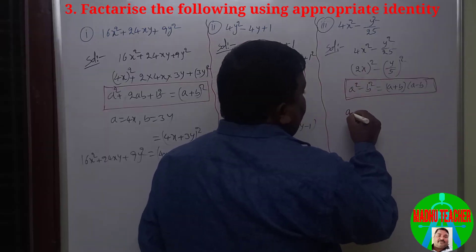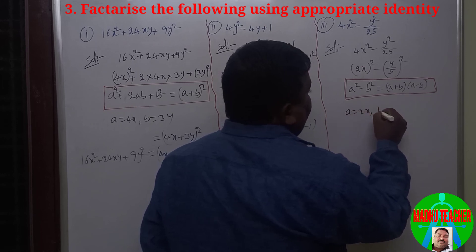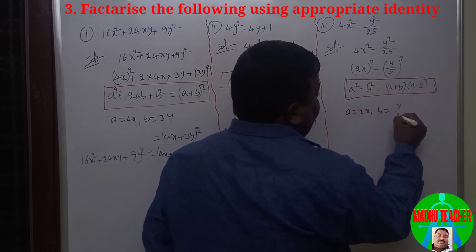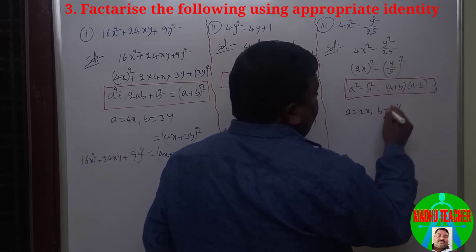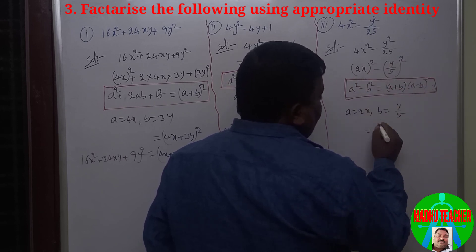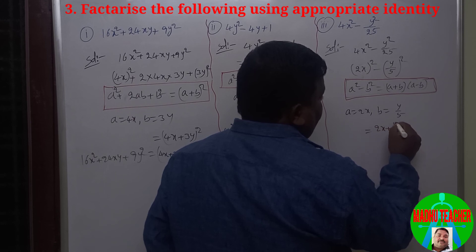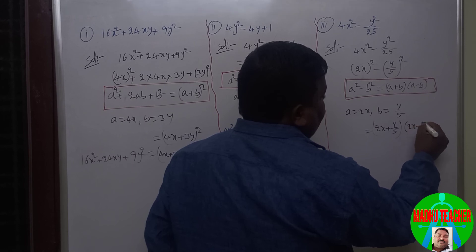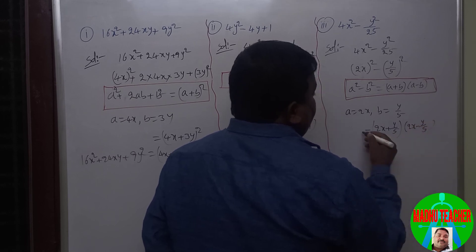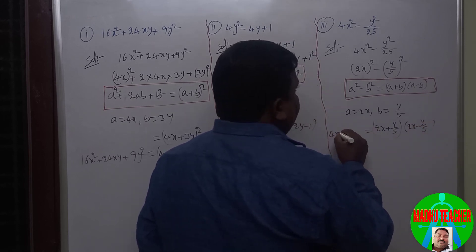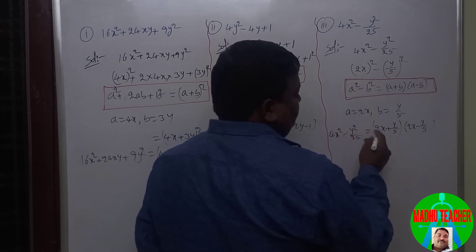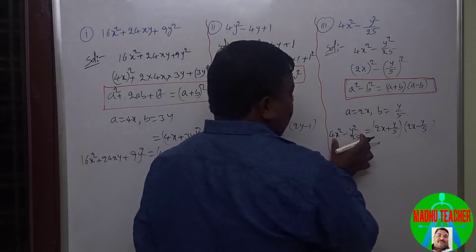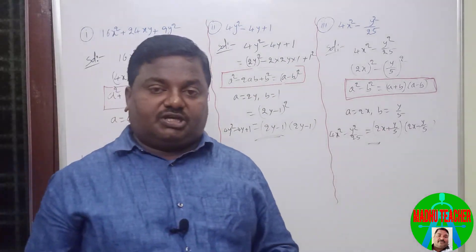By comparing these two, a equals 2x and b equals y/5. So a² − b² = (a+b)(a−b) = (2x + y/5)(2x − y/5). So 4x² − y²/25 = (2x + y/5)(2x − y/5). These two are the factors of this polynomial.